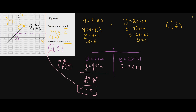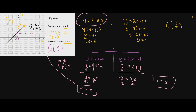Now we divide both sides by two and get x equals negative one — exactly what we saw on the graph. Using the other form, y equals two x plus four, we subtract four from both sides to get negative two equals two x, divide by two, and again get x equals negative one. It doesn't matter how you write the equation; you get the same result.